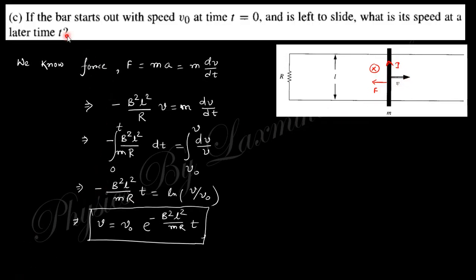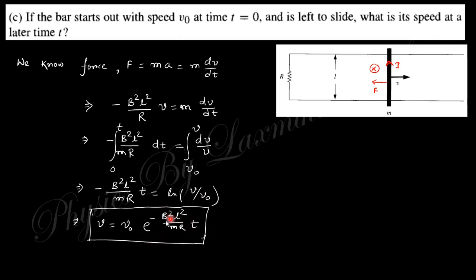Next: if the bar started with velocity V₀ at t = 0 moving to the left, what is the speed at time t? Here the force equals mass times acceleration, i.e., M·dV/dt, and the force we already obtained. After rearranging and integrating, you can easily find the velocity at time t, given that at t = 0 the velocity is V₀.